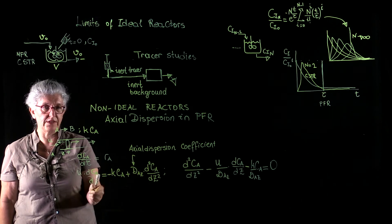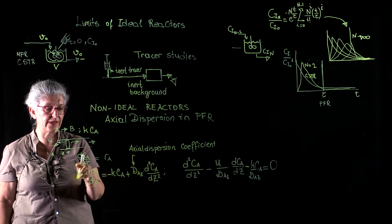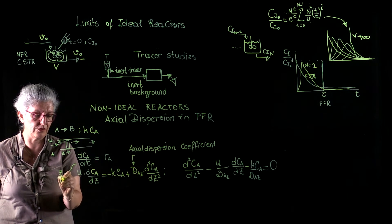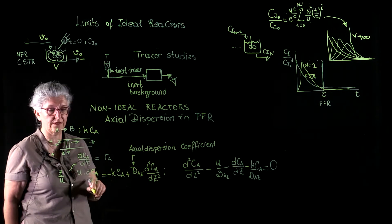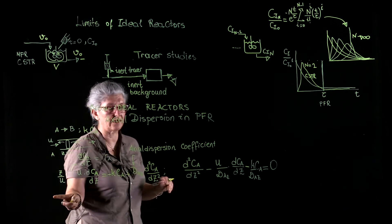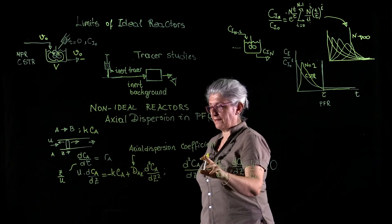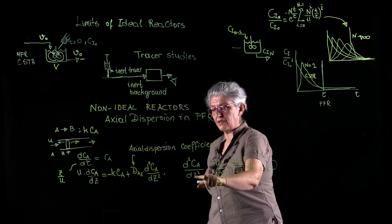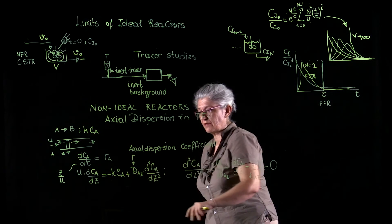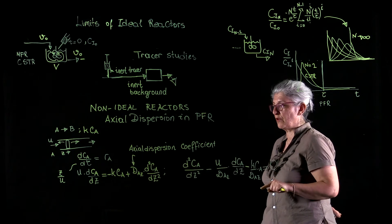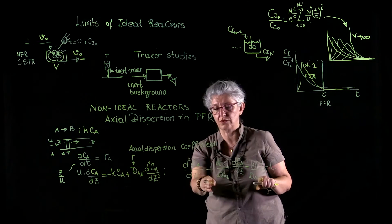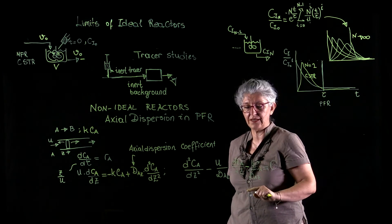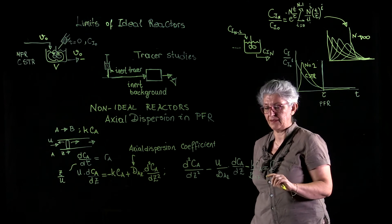This side of the equation is rearranged by defining tau as z over u, axial position over axial linear velocity. When we rearrange this equation, we have the following differential equation: d squared Ca over dz squared minus u over dAz dCa over dz minus k Ca over dAz.